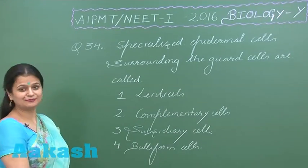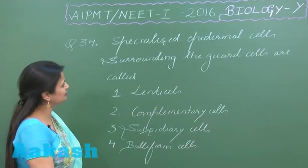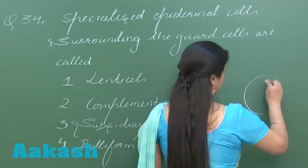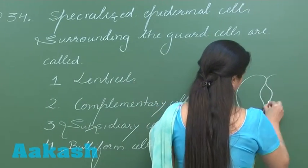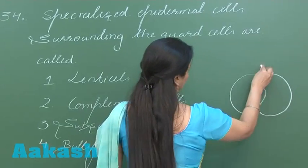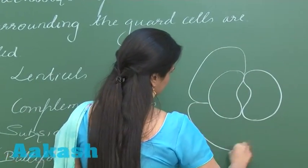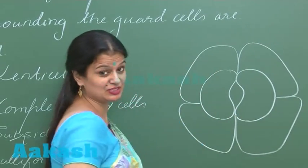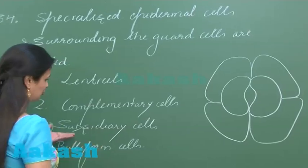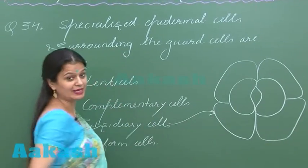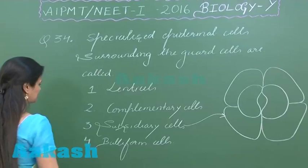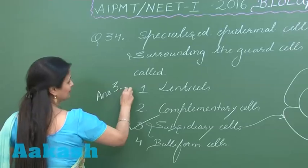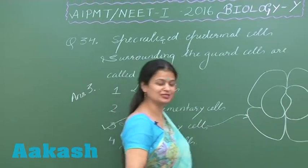Let's discuss question number 34: specialized epidermal cells surrounding the guard cells are called — so these are the guard cells in the dicots. They are present around the guard cells. These specialized epidermal cells are called subsidiary cells. The right option for this question is option number three. Let's move on to question number 35.